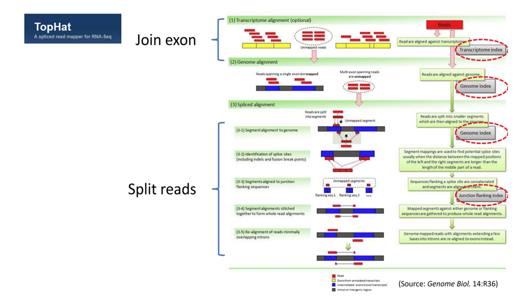For example, the TopHat 2 tool, co-developed by Johns Hopkins, Berkeley, and Harvard, tries to first identify known junction sites quickly by the join exon strategy and then use split read strategy to discover new junctions. A noteworthy feature of TopHat 2 is its usage of different indices for different strategies, which can further increase the speed of mapping.